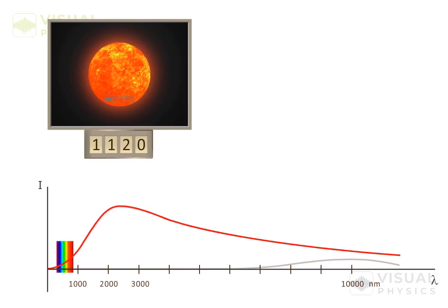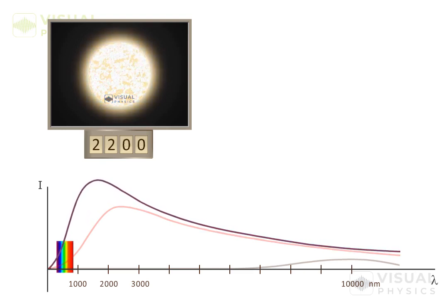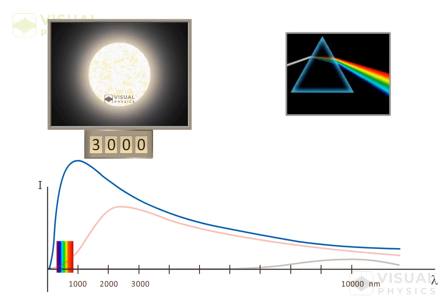If we increase the temperature further, then around 3000 Kelvin, the intensity of radiation becomes high for all wavelengths in the visible region. And the object appears to be white. You must be familiar that white light is actually composed of all the colors or wavelengths in the visible region.